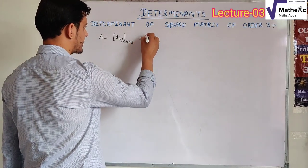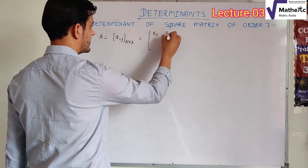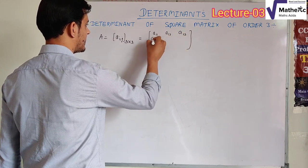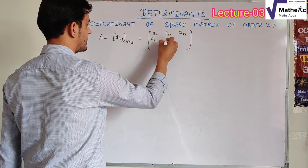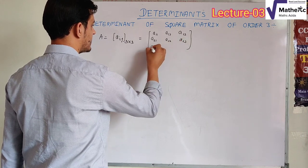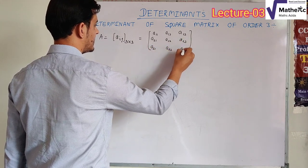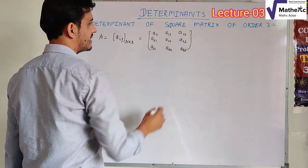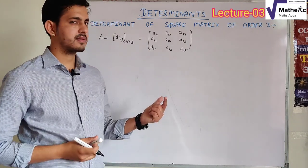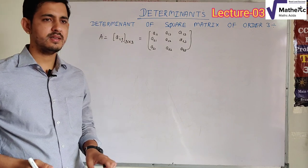A 3x3 matrix can be represented as [aij] of order 3x3. If we expand this, the elements are: a11, a12, a13 in the first row; a21, a22, a23 in the second row; and a31, a32, a33 in the third row. This is the square matrix of order 3x3.